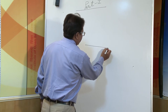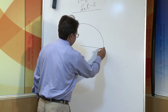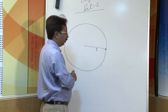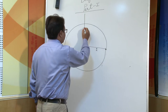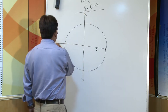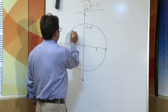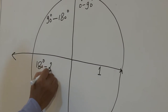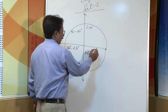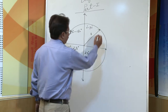When a ray makes a complete revolution we define the path it traces as a circle, and when its radius is one we call this a unit circle. This circle is divided into four quadrants: zero to ninety degrees, ninety to one-eighty degrees, one-eighty to two-seventy degrees, and two-seventy to three-sixty degrees.